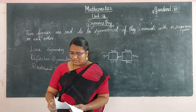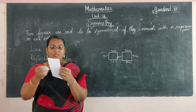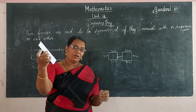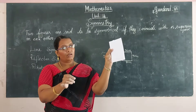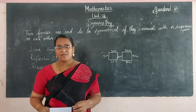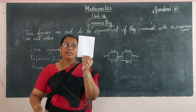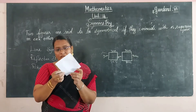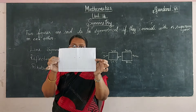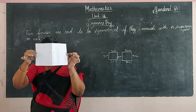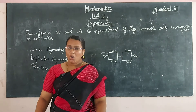Let us see another activity. Take one paper and fold it equally. You get the same shape and same size on both halves. Using a punching machine, put a hole on any one place of the paper. You will get a symmetrical hole on both sides. This method is called the punch hole method.